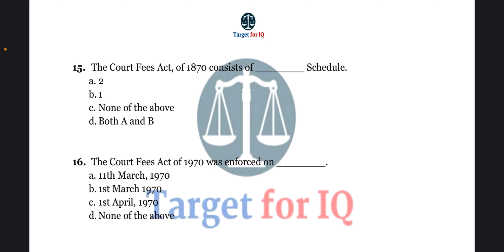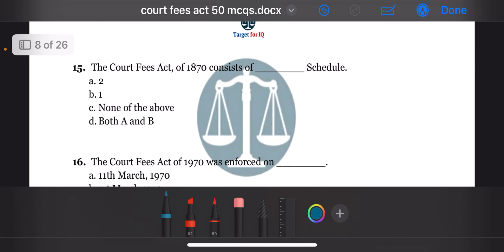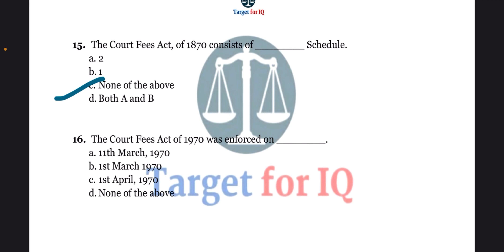Next question: this act consists of dash schedules. The options are A. 2, B. 1, C. None of the above, or D. Both A and B. The correct answer is option C. None of the above.